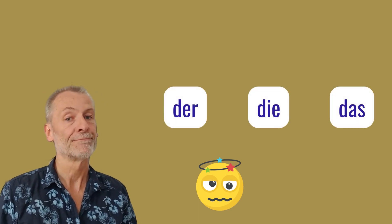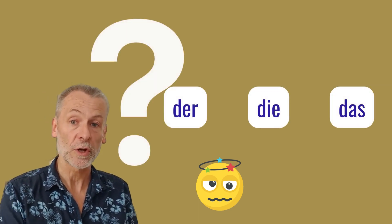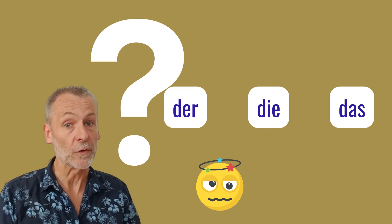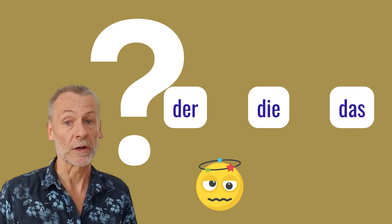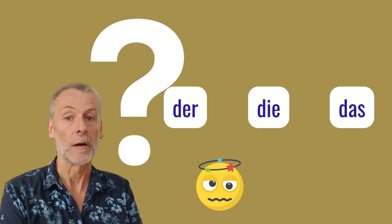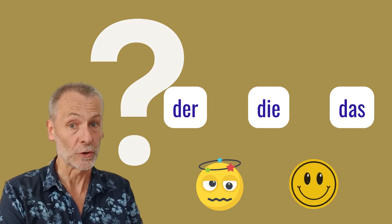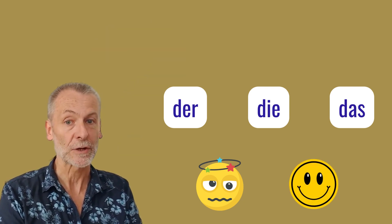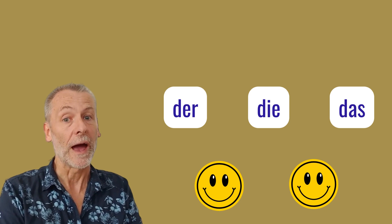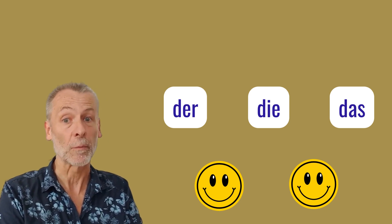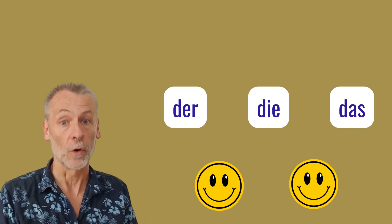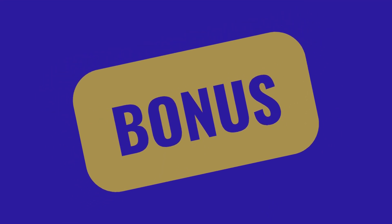Today we have a very important topic that causes headaches to many of you, I know. And this is the definite articles: der, die, das. I know there is not so much logic behind it, so it's not so easy to figure out which article to use for which noun. But I've got good news for you today — actually, two good news. And towards the end of the video there's a little something waiting for you, and this is called... Bonus!